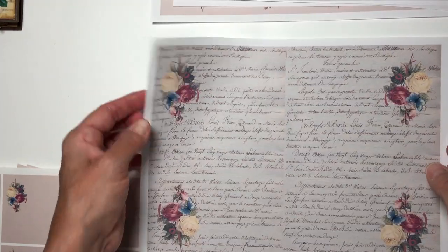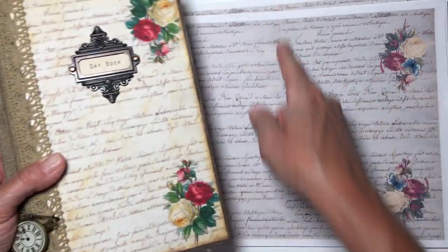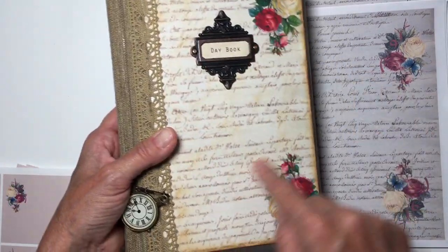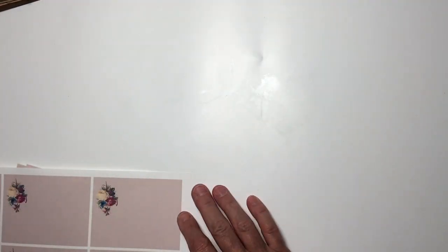Then this is another piece that you could use as end papers or part of your cover, which is actually what I've done here. See this, I cut these in half and this was the cover for this that I've grunged up.